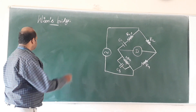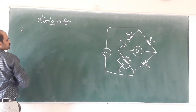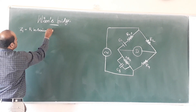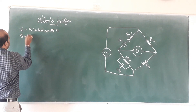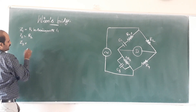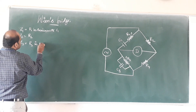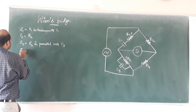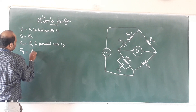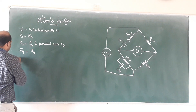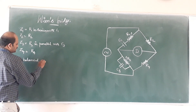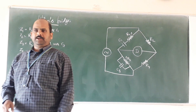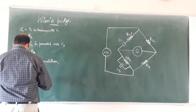The impedance Z1 consists of R1 in series with capacitance C1. Z2 is a pure resistive element R2. Z3 consists of a resistance and a capacitance in parallel with R3. Arm 4 consists of a pure resistance R4. At balanced condition, when the bridge is under balance, the detector reads a null value — this is called the balanced condition.